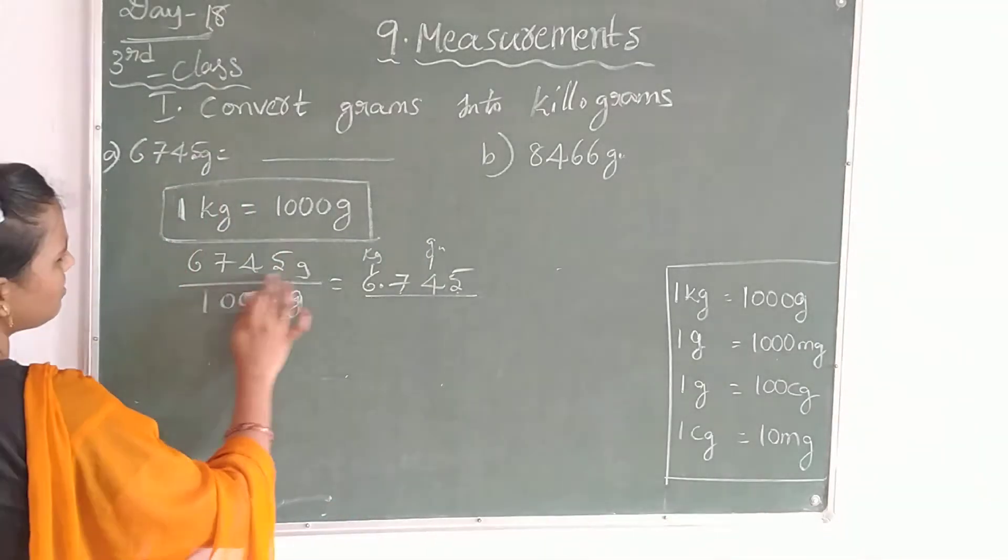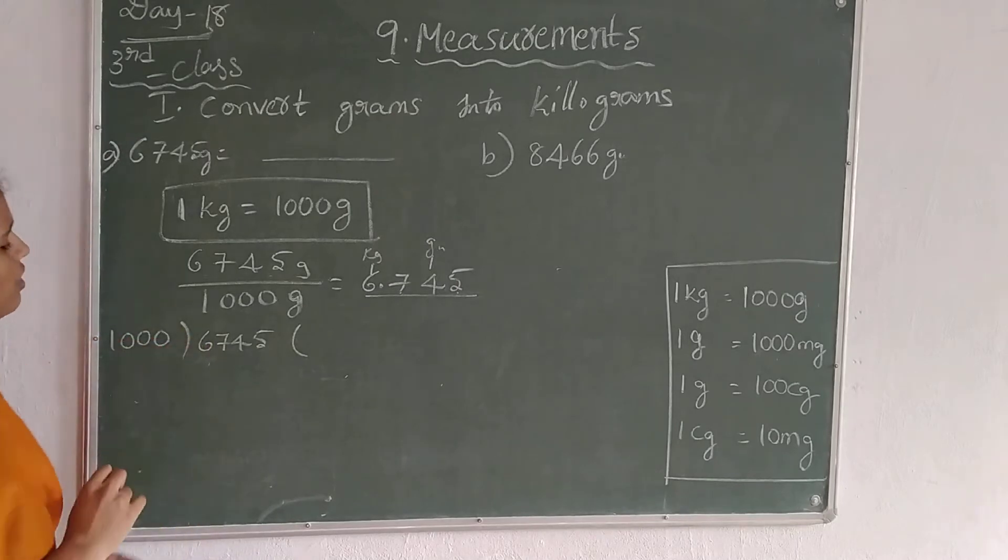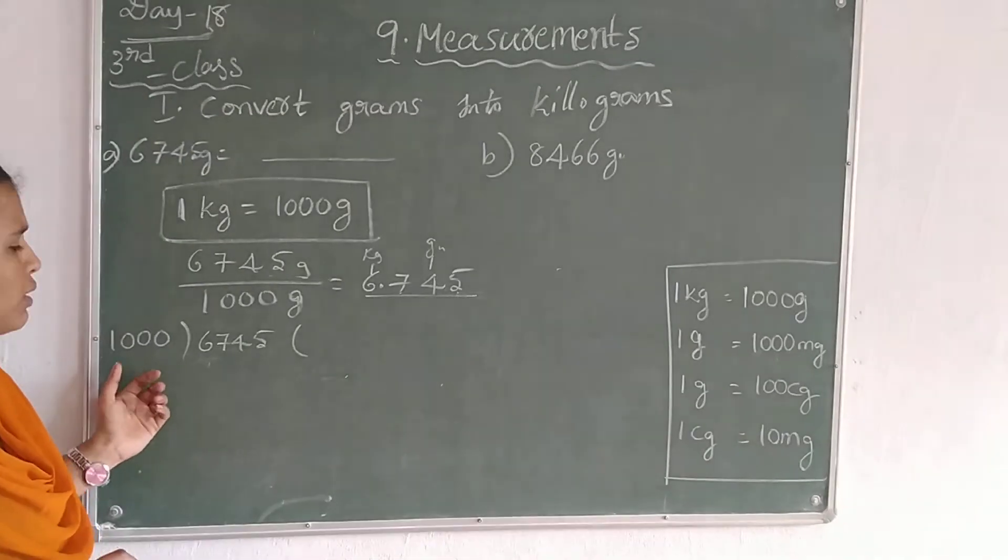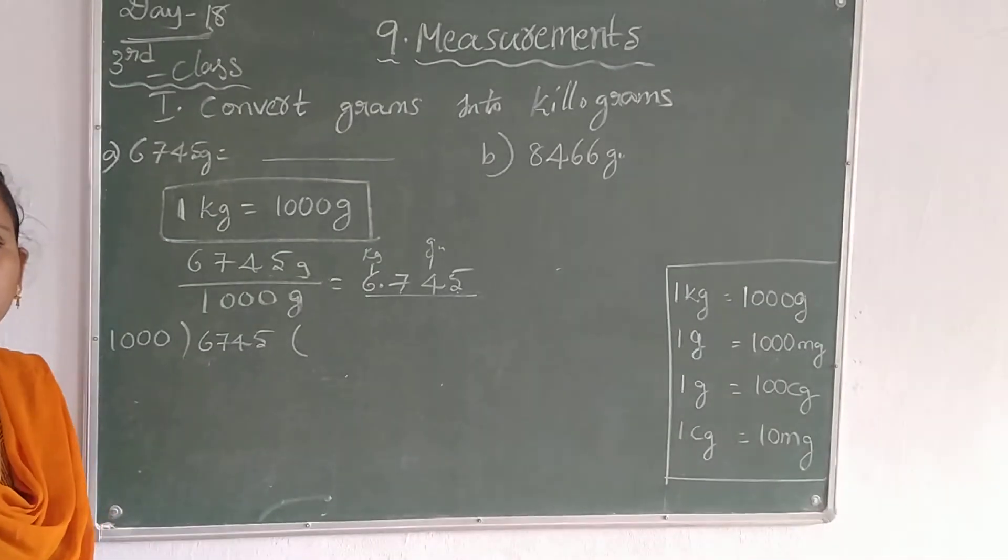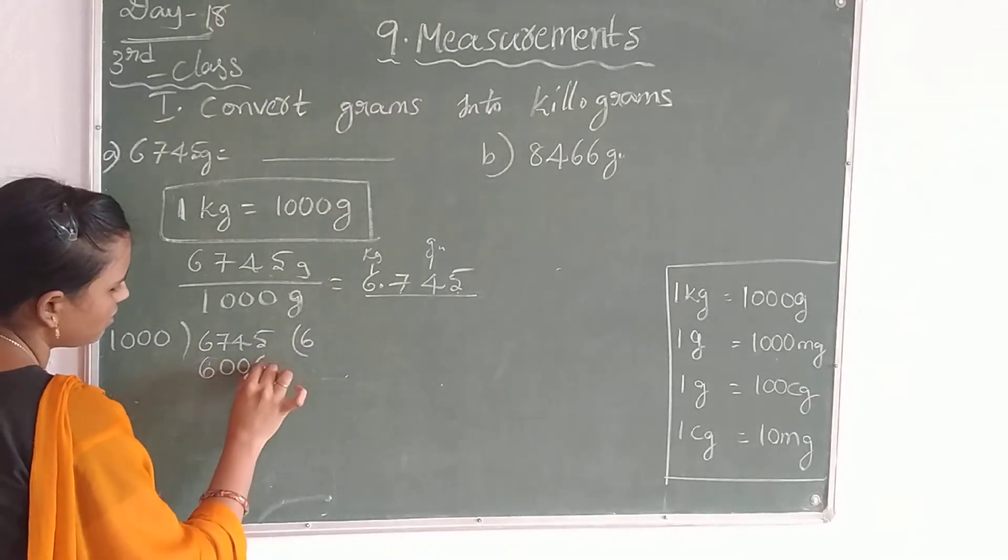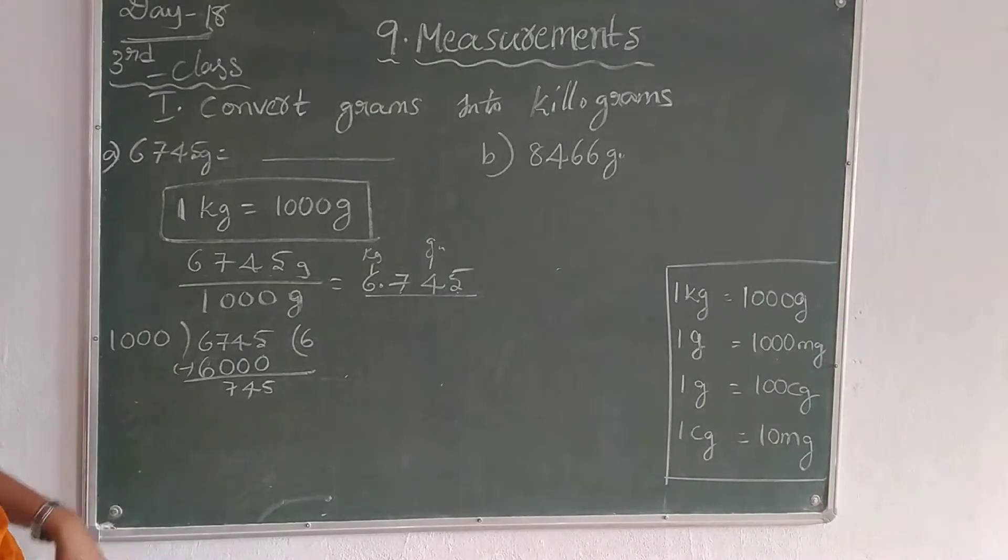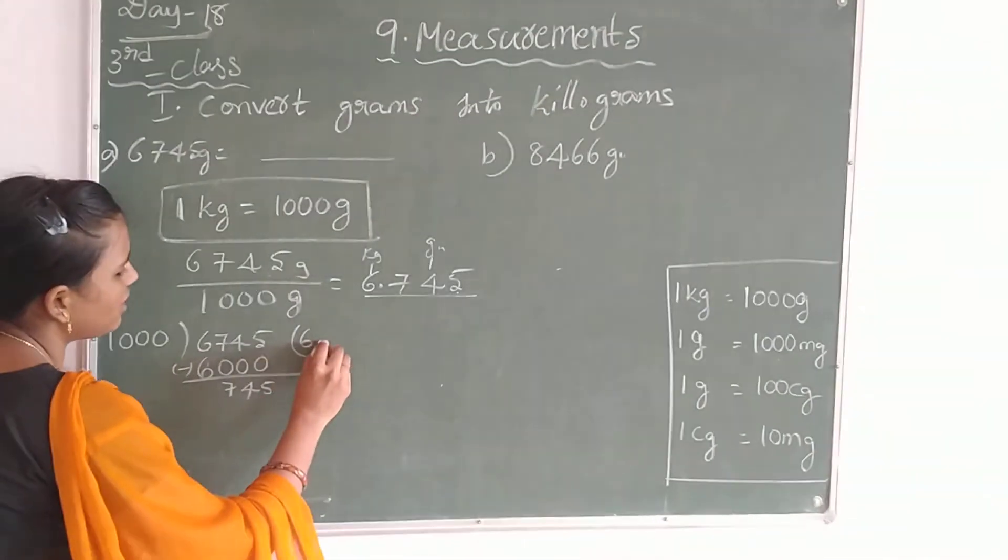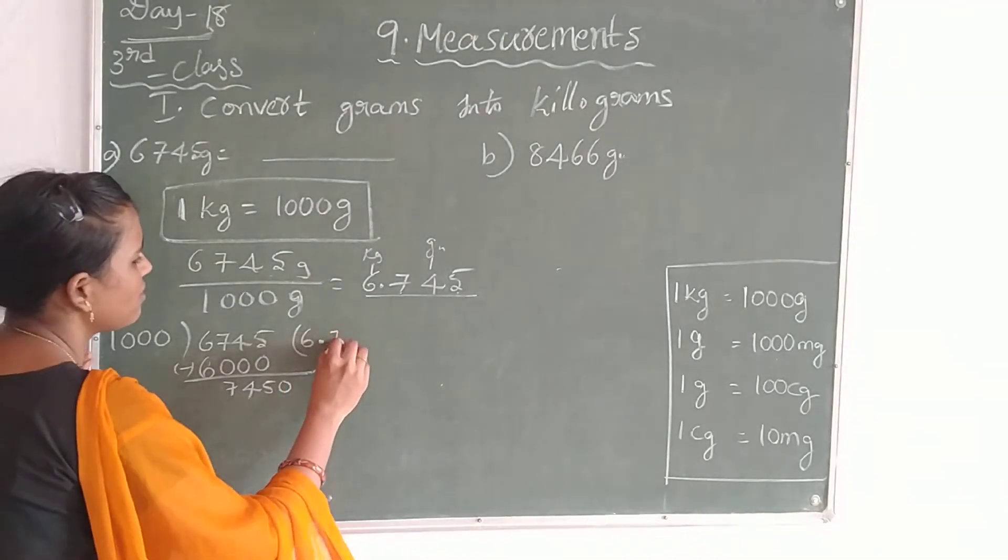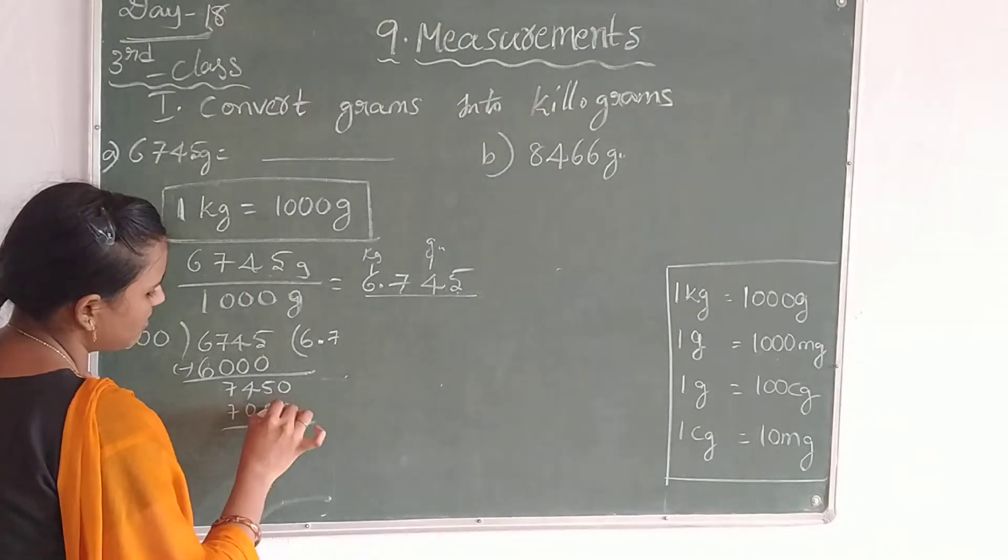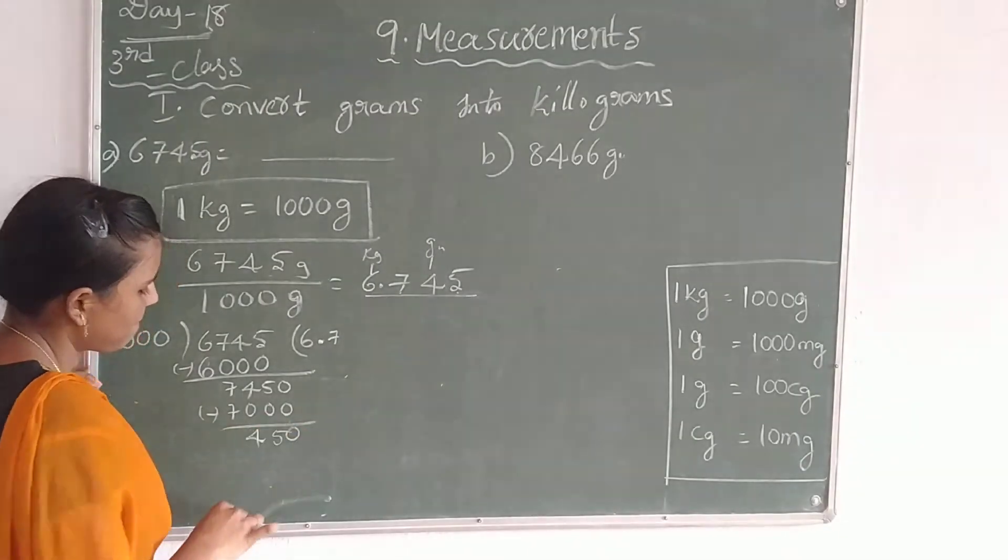One more way that I will tell you. First take this number as the dividend and 1000 as the divisor. 1000, how many times goes into 6745? 6000, that means 6 times. Write 6. Subtract these two numbers to get 0. Then 745. Take a point and put 0. 1000, how many times into 7? That is 7 times, which is 700. Subtract the both numbers to get 45.